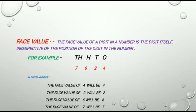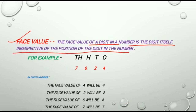Face value. The face value of a digit in a number is the digit itself, irrespective of the position of the digit in the number. It means the face value of a digit is the digit itself — it never changes according to the places.